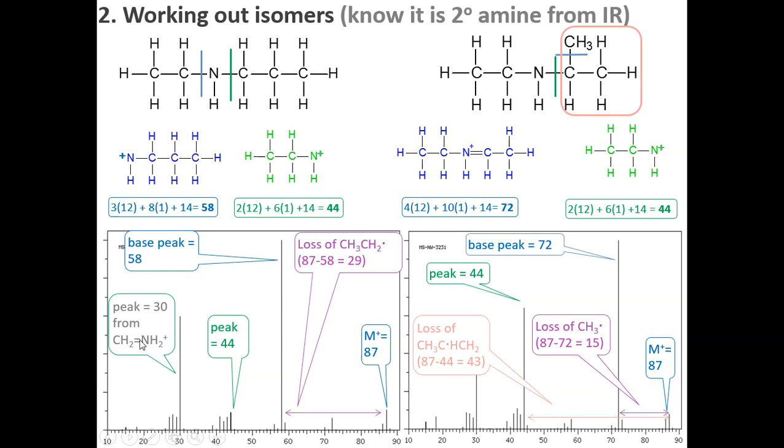And we have lost a propyl group of that 43. Because it is a nitrogen, we tend to see this distinctive peak at 37. It is a rearrangement, which you aren't expected to know, but it is useful knowing that if you have a strong peak at 30, you probably have an amine.